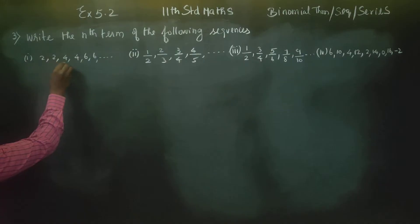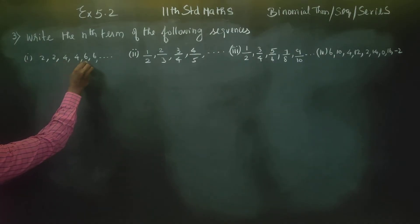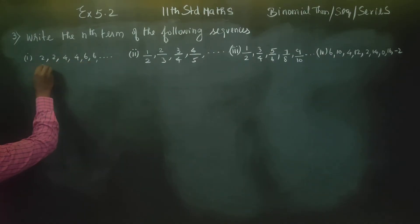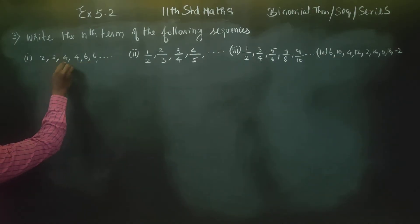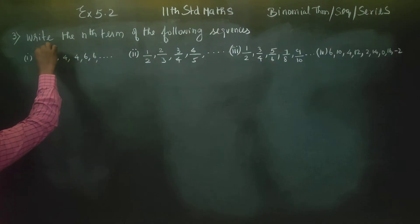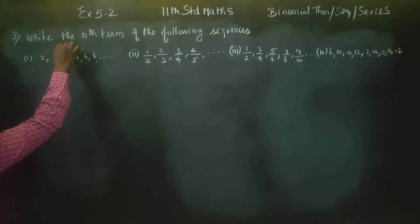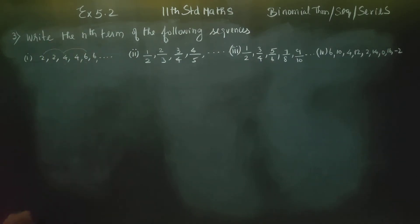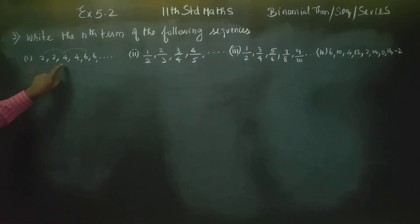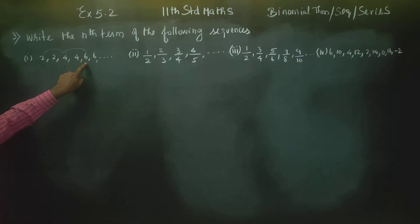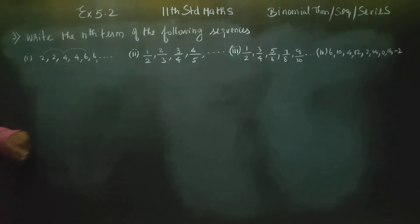The sequence is 2, 4, 6. This is my first number, this is my third number, this is my fifth number — these are the odd-positioned terms: 2, 4, 6.